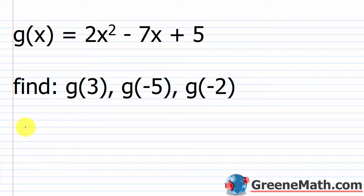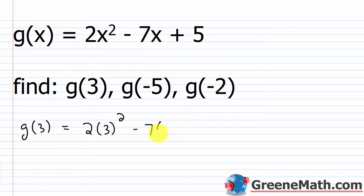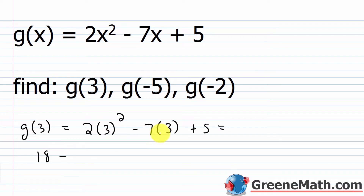To find g of 3, I plug in a 3 everywhere I see an x: 2 times 3 squared minus 7 times 3 plus 5. 3 squared is 9, times 2 is 18. Then minus 7 times 3 which is 21, plus 5. 18 minus 21 is negative 3, and negative 3 plus 5 is positive 2.